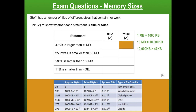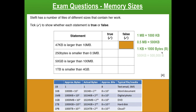Next: 250 bytes is smaller than 0.5 megabytes. 0.5 megabytes is 500 kilobytes, and one kilobyte equals 1,000 bytes, so 500 kilobytes would be 500,000 bytes. A couple of simple calculations show you that 500,000 bytes is way larger than 250 bytes. So is 250 bytes smaller than 0.5 megabytes? Yes, absolutely — that is true.